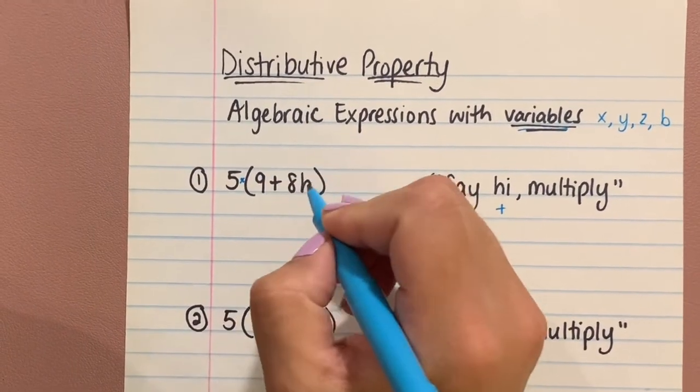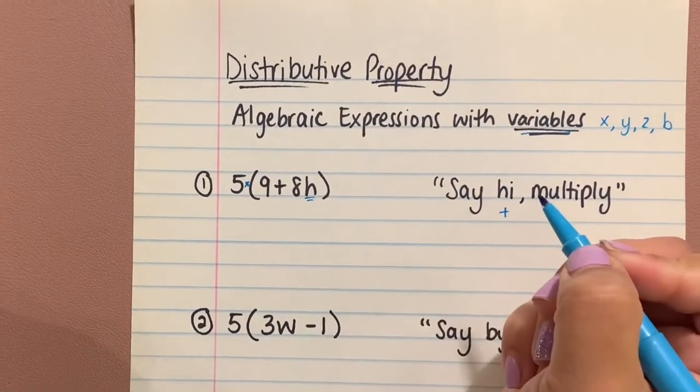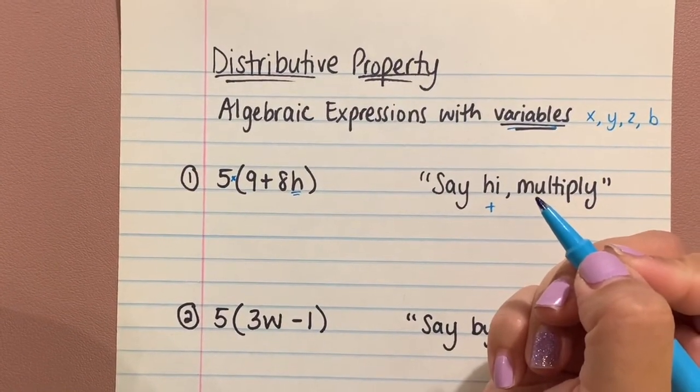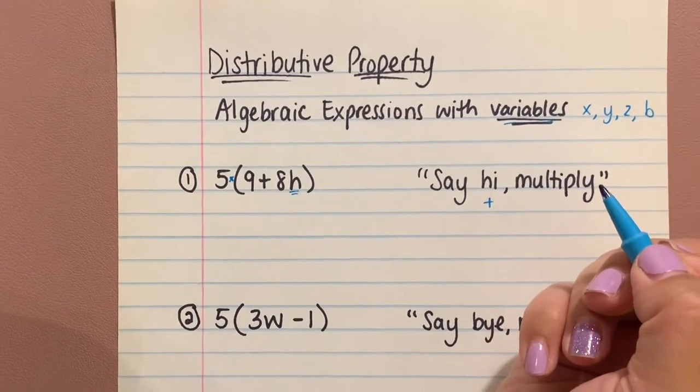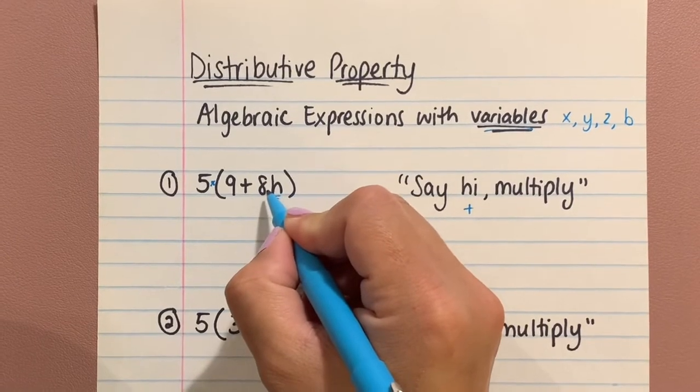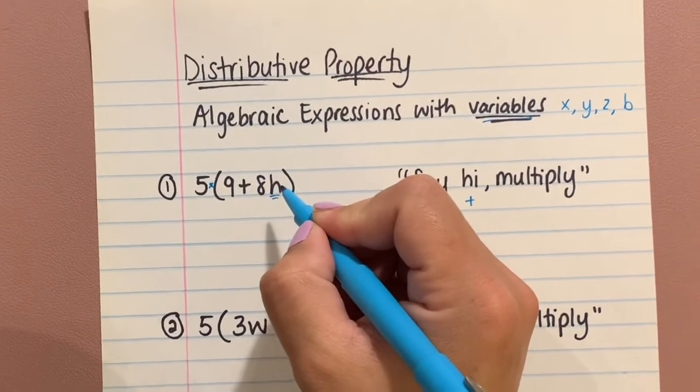This is a little bit different than the last time because we have our variable here. What I like to think of the variable is—and it might seem kind of silly—but it's like a baby. The variable is attached to the eight. So the eight is like the mom or the dad or whoever has the baby.